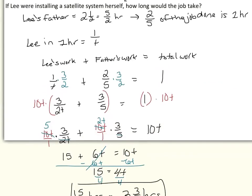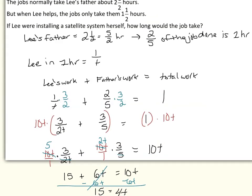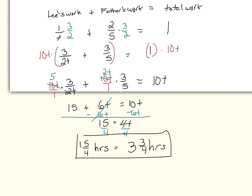To recap: since it takes Lee's father 2 and a half or 5 halves hours to install one job, he can finish 2 fifths of the job in one hour. The amount of work Lee can do in one hour is represented by 1 over T. Using the formula Lee's work plus father's work equals one total job, and multiplying by 3 halves for the combined time, we get 3 over 2T plus 3 fifths equals 1. Using the LCD, multiplying and simplifying all the way to the end, we get 3 and 3 fourths hours.